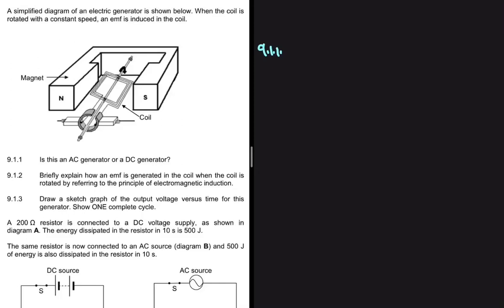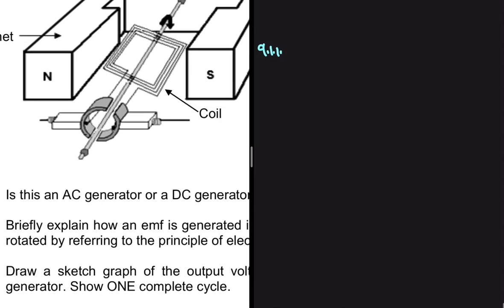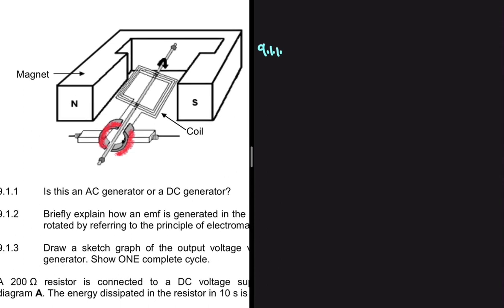Is this an AC generator or a DC generator? It's easy to say that we have a DC generator because of the presence of a split ring. As you can see, we have a ring that is split, and that is a component that is used in a DC generator. In an AC generator, we instead have slip rings.